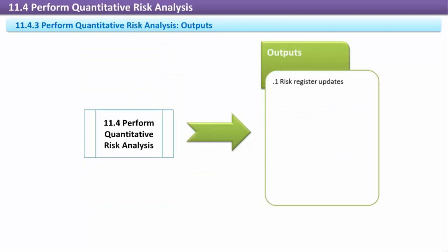Outputs: Risk Register Updates. Quantitative analysis results in updates to the risk register, including the probability and impact assessments for risks. Data from the risk register can also be aggregated to provide data for risk analysis at the project level or at the project objective level.